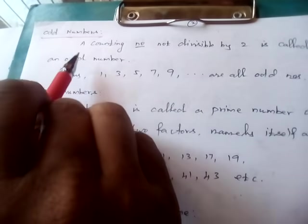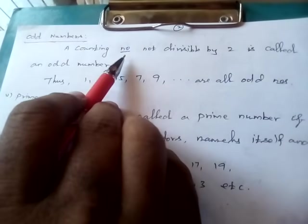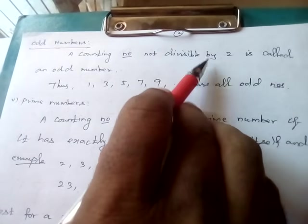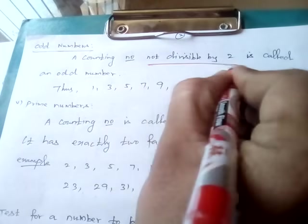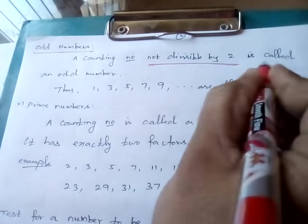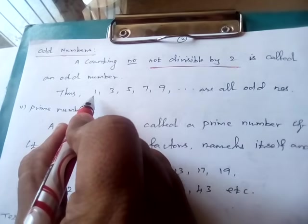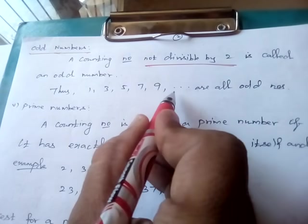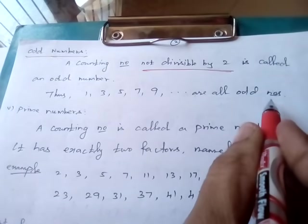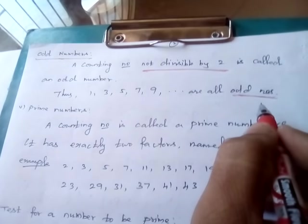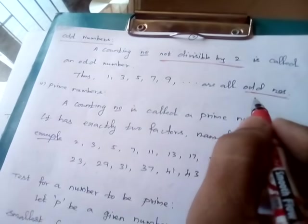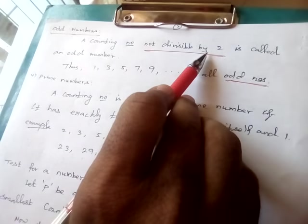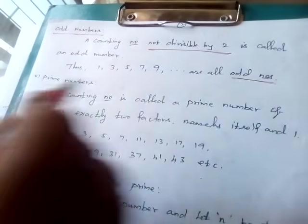Next, odd numbers. A counting number not divisible by 2 is called an odd number. So, 1, 3, 5, 7, 9, 11, etc. are all odd numbers. The counting number that is not divisible by 2 is called an odd number.